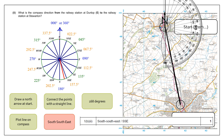Draw a straight line between the start and end point, take out the protractor, and measure the angle. In this case, if it was a bearings question, you'd just write 168 degrees. Because it's a direction question, plot that onto your compass drawn at the start — and because it's closer towards south-south-east, write south-south-east as your answer.